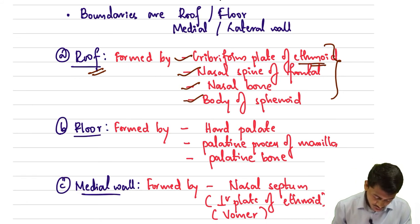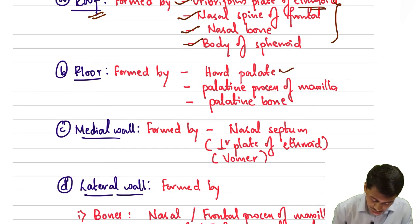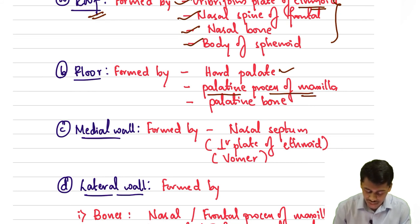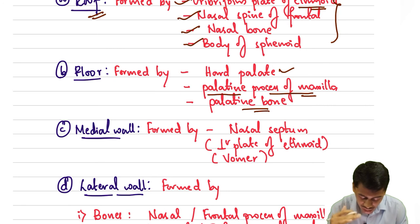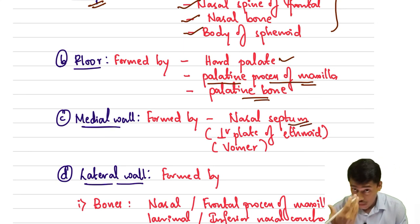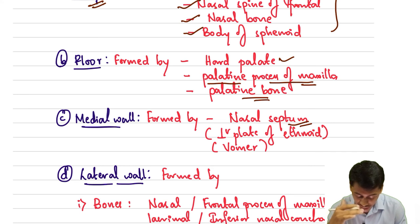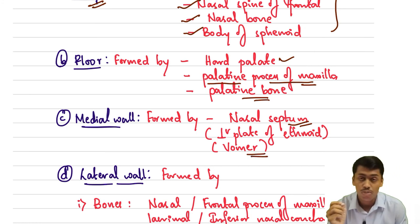The floor is formed by the hard palate — specifically the palatine processes of the maxilla and the palatine bone. The medial wall is formed by the nasal septum, which consists of the perpendicular plate of the ethmoid as well as the vomer.